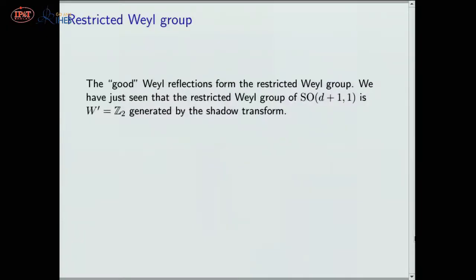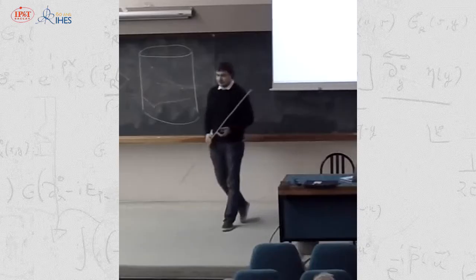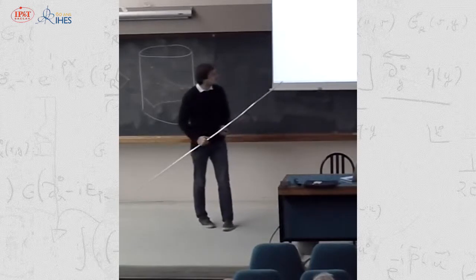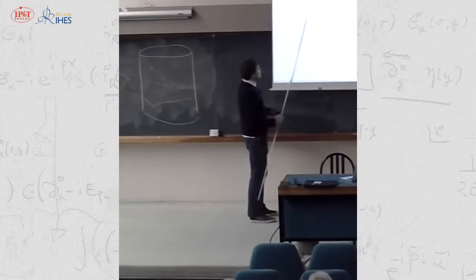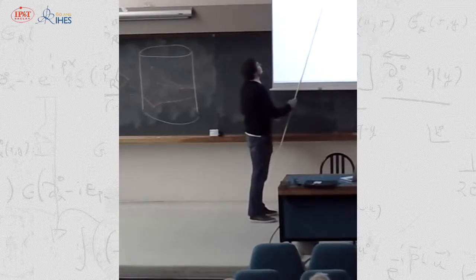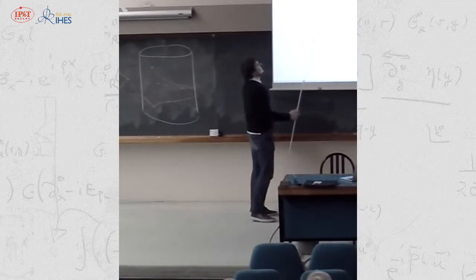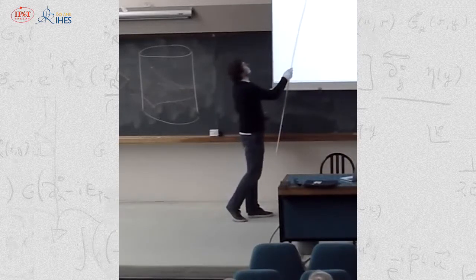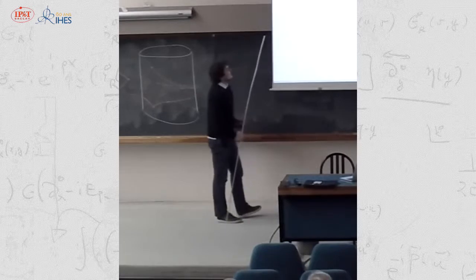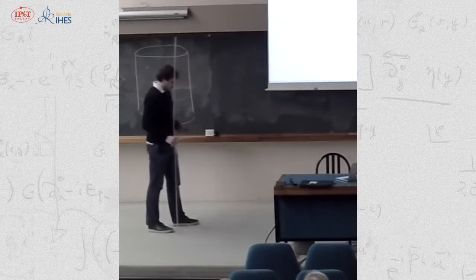The good reflections which preserve the property of the weight being dominant form a subgroup of the Weyl group which I'll call the restricted Weyl group. In the Euclidean conformal group case the restricted Weyl group is just Z₂, and there is not much more you can do.